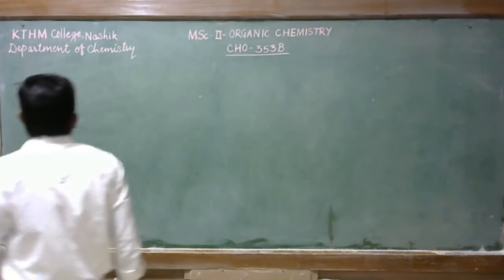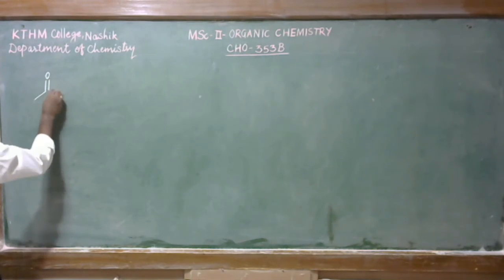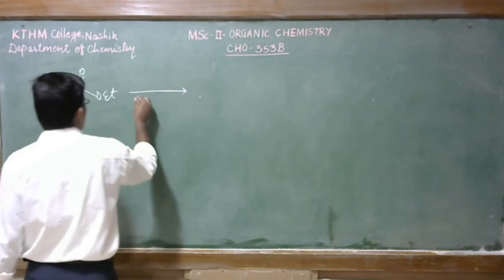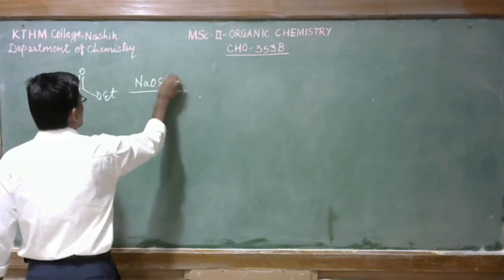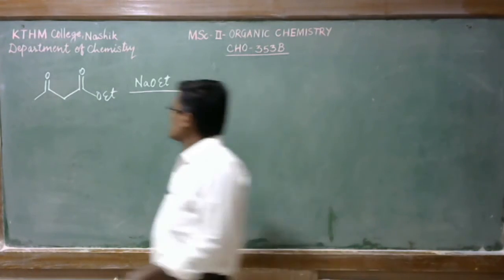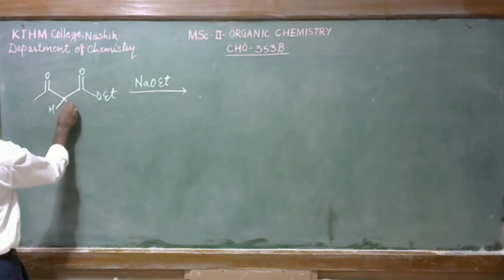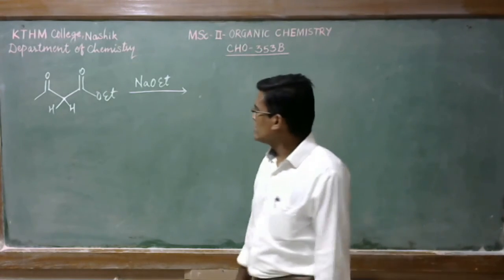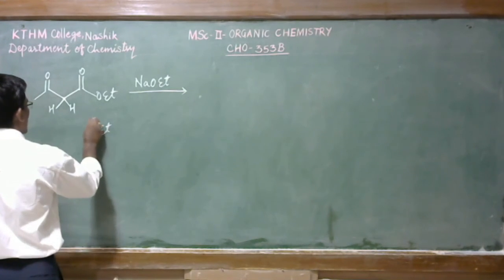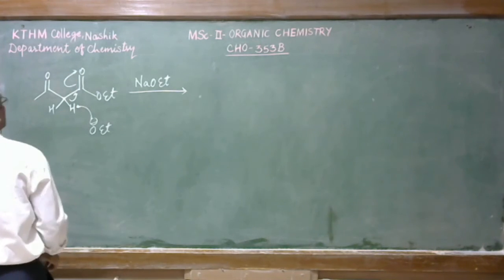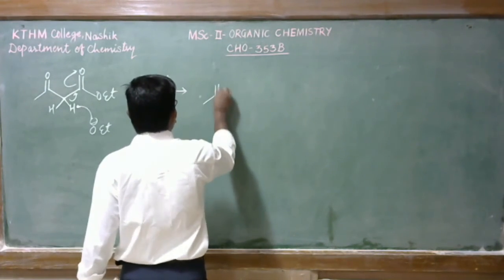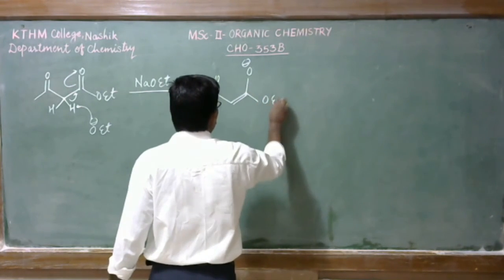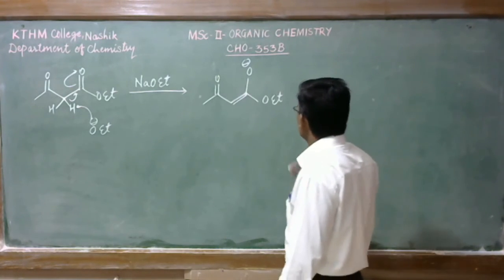Let us have its synthesis. We have this acetoacetate. We treat it with base like sodium ethoxide. It will abstract the active methylene proton. There are two hydrogens on that active methylene group. The base will accept this proton to give this intermediate.